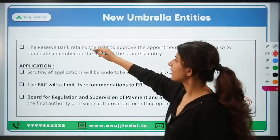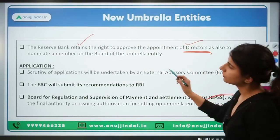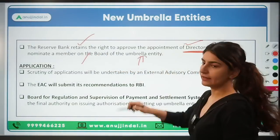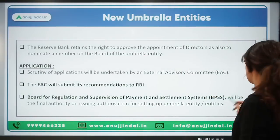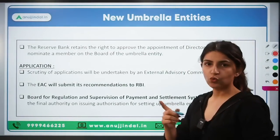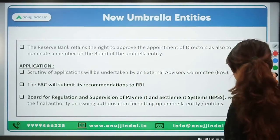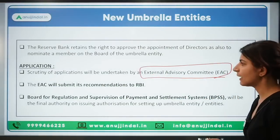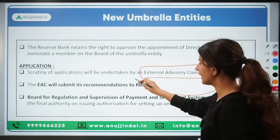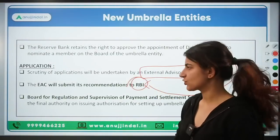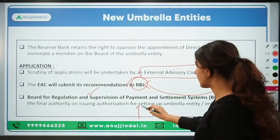RBI retains the right to approve the appointment of directors and to nominate a member of the board of the new umbrella entity. Any entity that wants to become a new umbrella entity must submit an application to RBI for a license. This application first goes to the External Advisory Committee, which scrutinizes it and submits it to RBI. The Board of Regulation and Supervision of Payment and Settlement System will be the final authority on issuing authorization.